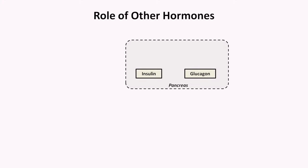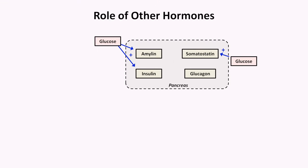While insulin and glucagon are the two most key hormones involved in the moment-to-moment regulation of metabolism, there are many other contributors. There are two other hormones produced in the pancreas: amylin, produced by beta cells and co-secreted with insulin, and somatostatin, produced by delta cells. The secretion of insulin, amylin, and somatostatin are all stimulated by high serum glucose, while glucagon secretion is inhibited by it. While insulin suppresses glucagon secretion, somewhat counterintuitively, glucagon stimulates insulin secretion — the only interaction between them that is not antagonistic. Amylin helps with insulin's suppression of glucagon, while somatostatin actually inhibits both.